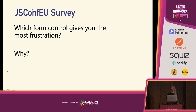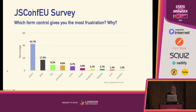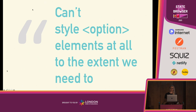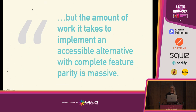Greg then shared an amended survey with JS Conf attendees in 2019 and asked two additional questions: which form control gives you the most frustration, and why. Select clearly stole the show, with nearly 50% of respondents saying select. Date was the next closest at 17.3%. Some of the verbatim responses: 'Select requires hacky tricks. Can't style option elements at all to the extent we need to.' And: 'The amount of work it takes to implement an accessible alternative with complete feature parity is massive.' I can just feel the pain oozing out of this response.